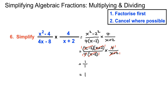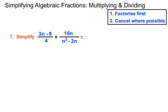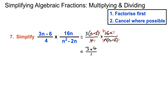Here we've got a couple of factorising opportunities. On the top left, 3 can come out: 3 times n and 3 times minus 2 gives us 3n minus 6, over 4. On the bottom we have 16n, and we can take n out: n times n gives n squared, and n times minus 2 completes the factorising. Four can go into the bottom once and into the top four times; n cancels; n minus 2 cancels. We're left with 3 times 4 which is 12 on top, and 1 on the bottom, so the answer is 12.